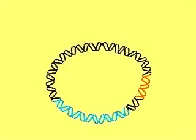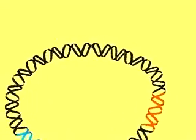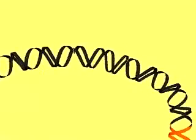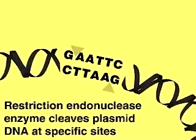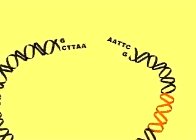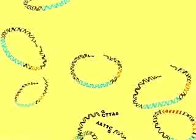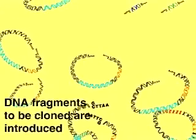To insert foreign DNA, we must first use a restriction enzyme to cleave the vector at the cloning site. Here, ECO-R1 cleaves the palindromic sequence GAA-TTC to produce single-stranded ends called sticky ends. These can hybridize with any piece of DNA that has also been cut with ECO-R1.